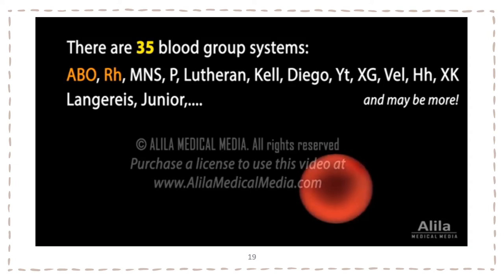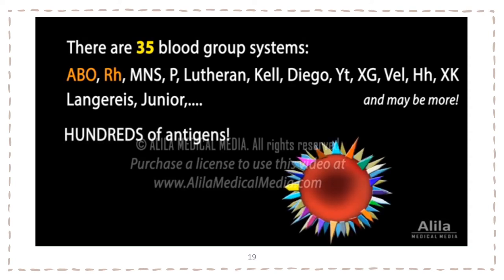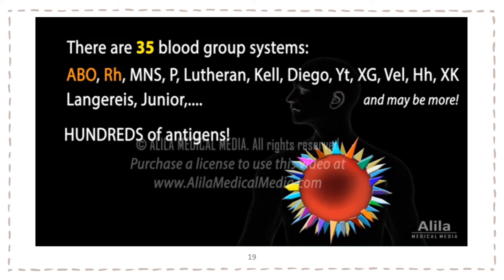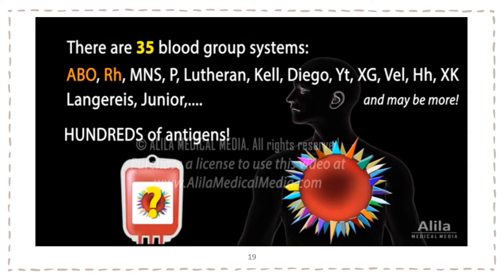Altogether there are hundreds of antigens, giving rise to a gigantic number of possible blood types. A fully specified blood type should describe the complete set of antigens a person has. In theory, this list must be determined for both donor and recipient before a transfusion. In reality, however, most people only need to care about their ABO type and RH factor.